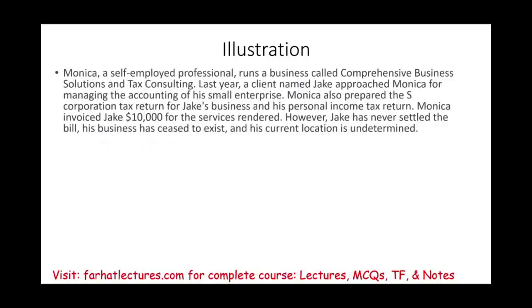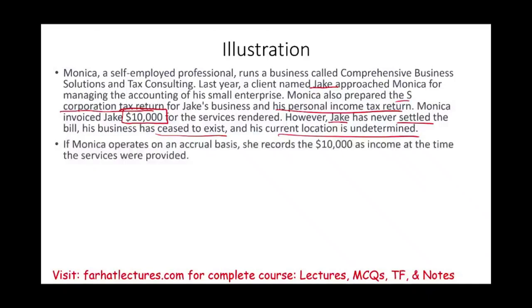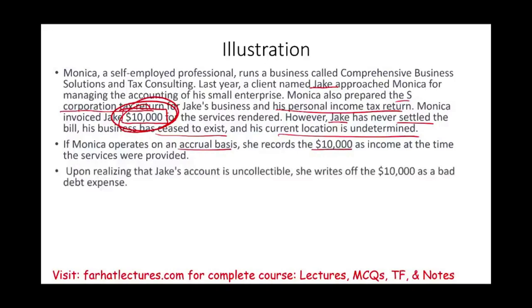Consider this illustration: Monica, a self-employed professional running a tax consulting business, performed work for Jake last year — she prepared his S corporation tax return and personal income tax return and invoiced him ten thousand dollars. Jake never paid his bill, his business ceased to exist, and his current location is undetermined. If Monica is an accrual basis taxpayer, she recorded the ten thousand dollars as revenue when the service was provided. Once she realizes Jake's account is uncollectible, she writes off the account as bad debt, recognizing a ten thousand dollar bad debt expense.